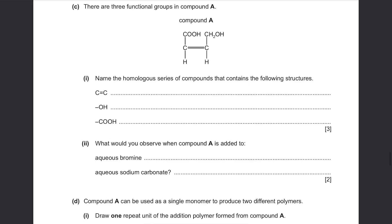Part C: There are three functional groups in compound A. Name the homologous series of the compounds that contain the following structures. C double bond C, it's an alkene. OH, it's an alcohol. Then COOH, it's carboxylic acid.